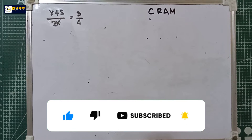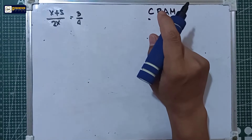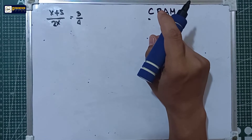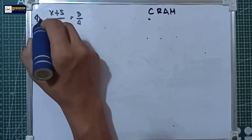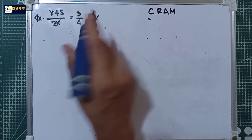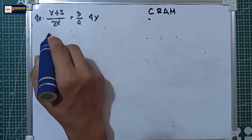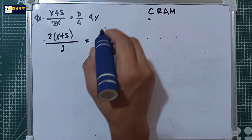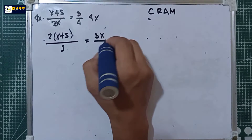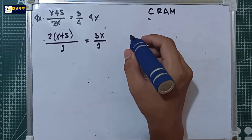To simplify this equation we will use the CRAM method. For the letter C, clear all fractions by multiplying both sides of the equation by the LCD. If we multiply both sides by 4x, the denominators cancel, giving us (2x + 5) / 1 = 3x / 1. So the LCD is 4x and the result is 2x + 5 = 3x.